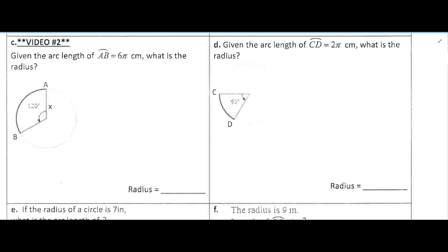So let's read through the problem. We have, given the arc length of AB is 6π centimeters, what is the radius? Alright, so my arc length here AB, we see it has a measure of 120 degrees, and we see that it has a length of 6π.